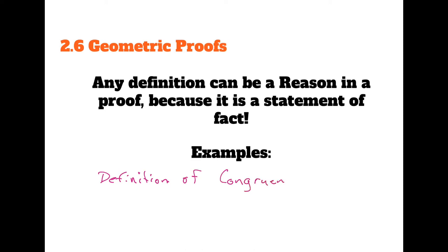The definition of congruent says: if something is congruent, then it is also equal. And that is a biconditional, so it also works backwards — if we have two things that are equal, then we also know that they are congruent as well. So we can use the definition of anything we know: definition of line segment, definition of what a line is, definition of vertical angles — any of those things. So let's use them.